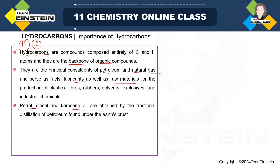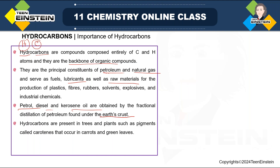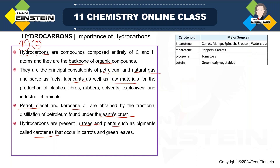Petrol, diesel, and kerosene oil are obtained by fractional distillation of petroleum, which is naturally found under the Earth's crust. From another angle, hydrocarbons are also present in trees and plants. A very good example is carotenoid-type compounds — they are present as pigments called carotenes, which occur in carrots and green leaves. Examples include beta-carotene, alpha-carotene, and lycopene, with their major sources mentioned on the right-hand side.